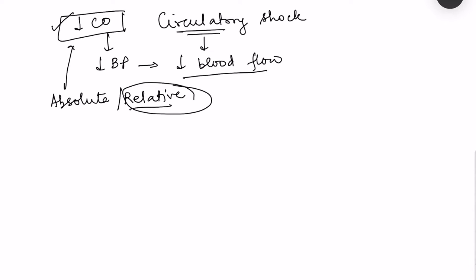Based on this concept, circulatory shock is defined as a decrease in tissue perfusion caused due to an absolute or relative decrease in cardiac output. So what will lead to such a condition? What can be the causes of circulatory shock? We will try to understand the concept so that we never forget the causes.